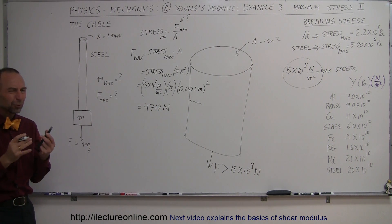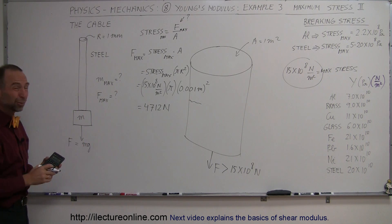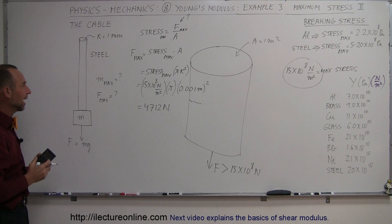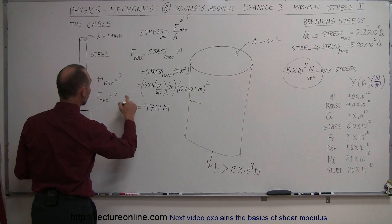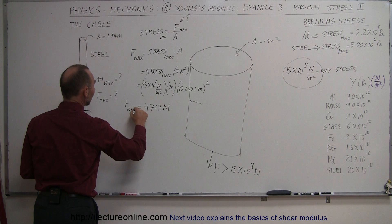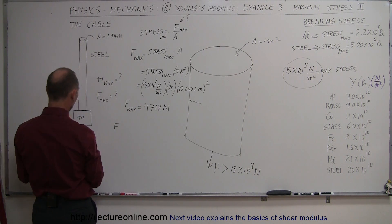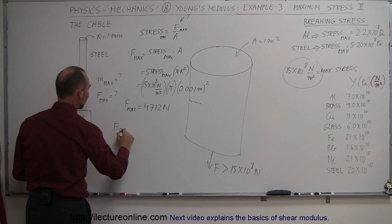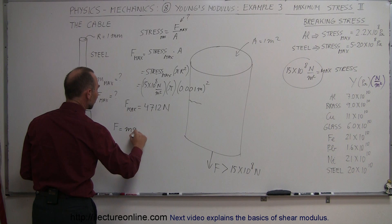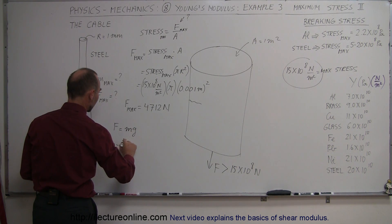Now, of course, most of us don't really quite understand what that is unless we deal with those units on a daily basis. So let's convert that to how much mass we can hang from it. And since we know, of course, this is force max, and since we know that the force of an object hanging from a cable is equivalent to the weight of the cable, mg, that means that m is equal to the force divided by g.